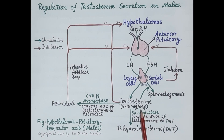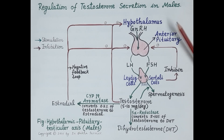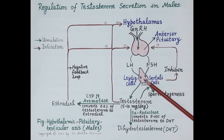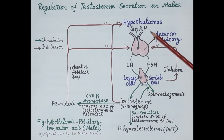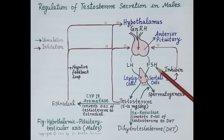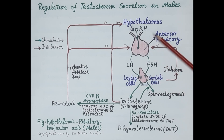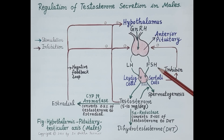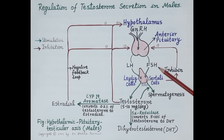Now look at this diagram. This diagram shows the hypothalamic-pituitary-testicular axis and depicts the hormonal interrelationship between the hypothalamus, anterior pituitary, and the testes. The hypothalamus produces gonadotropin-releasing hormone (GnRH), which stimulates the anterior pituitary to release gonadotropins — namely luteinizing hormone (LH) and follicle-stimulating hormone (FSH). GnRH is discharged in a pulsatile manner every 90 to 120 minutes, causing pulsatile secretion of LH and FSH.